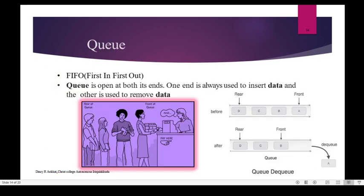Next linear data structure is queue. We use queue in real life — like waiting in a line. This concept is first in, first out — FIFO. Queue has two ends: front and rear. Elements are inserted at the rear and processed or deleted from the front. There are two operations: enqueue (NQ) means insertion and dequeue (DQ) means deletion.